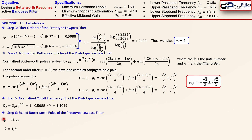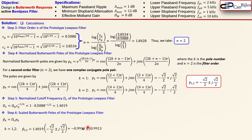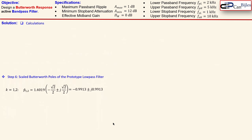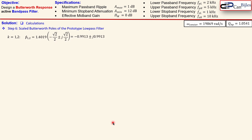Step six: the scaled Butterworth poles. We have the normalized Butterworth poles but now we need the scaled Butterworth poles of the prototype lowpass filter. For that we use the normalized cutoff frequency omega_c and the poles we calculated. The scaled poles p̂_k for k = 1 and k = 2 are obtained by multiplying the pole expressions by the cutoff frequency omega_c, giving us the scaled versions.